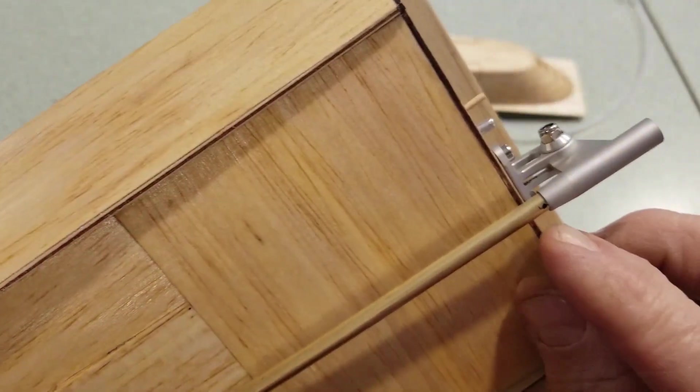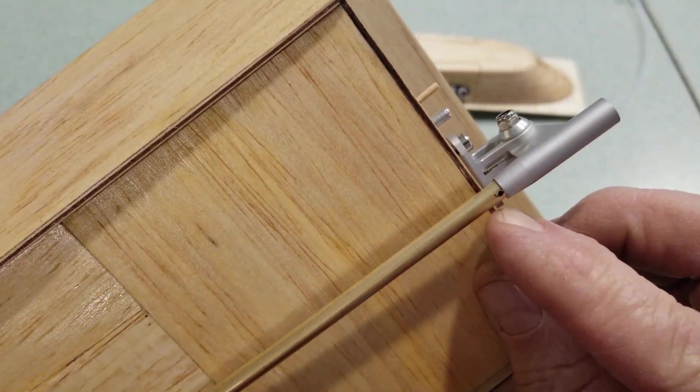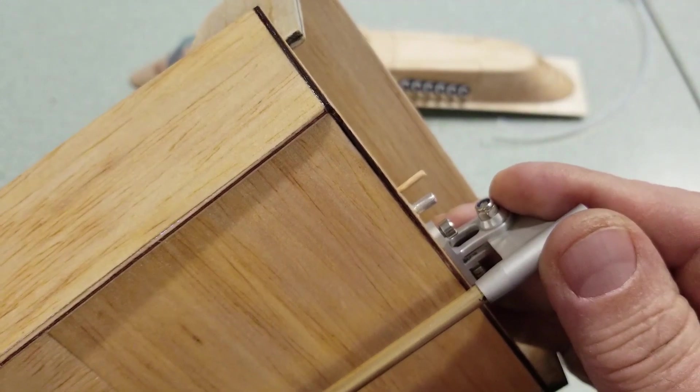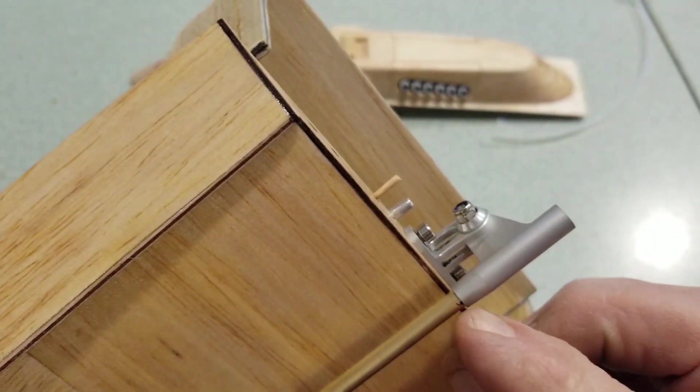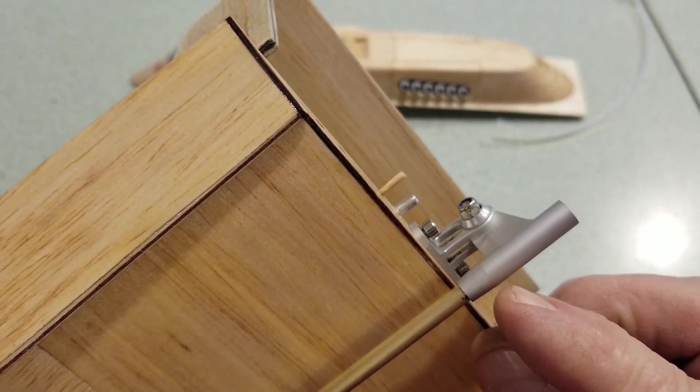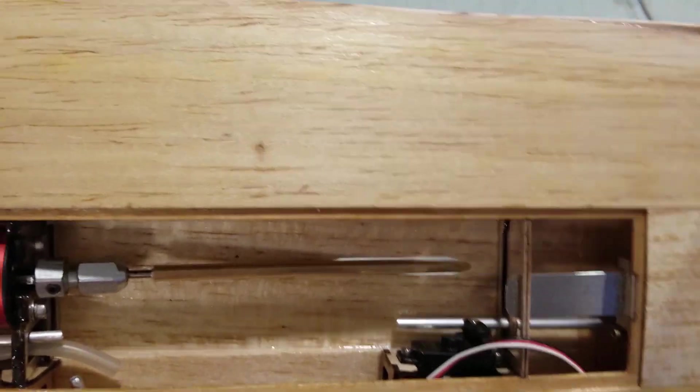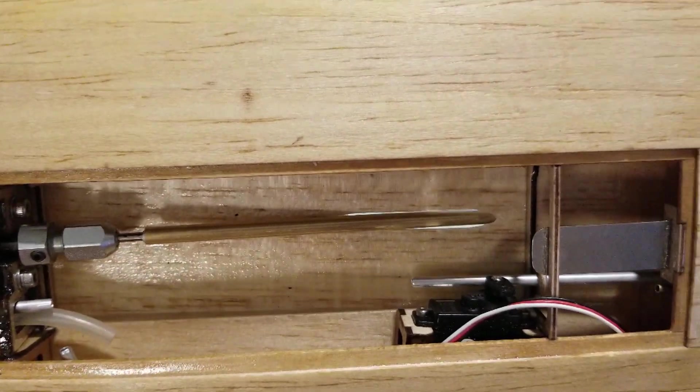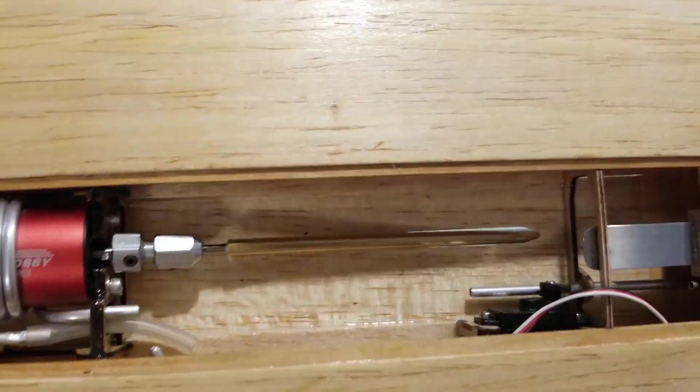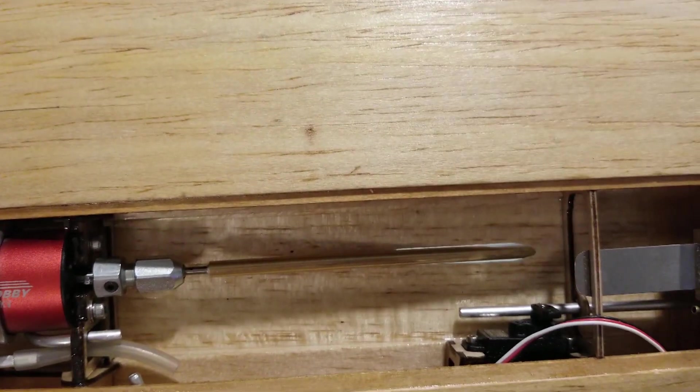Got a mark here where it fits right up against this strut here, and I got the length cut off where it fits in the strut. Now that's ready to epoxy in the floor, the stuffing tube.